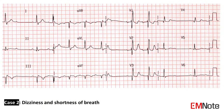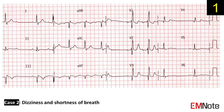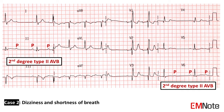Case 2: The patient presents with dizziness and shortness of breath. The ECG shows second-degree Mobitz type 2 AV block. Mobitz 2 AV block is a form of second-degree AV block in which there are intermittent non-conducted P waves without progressive prolongation of the PR interval.